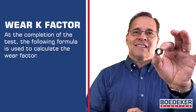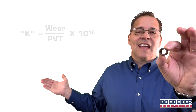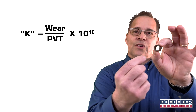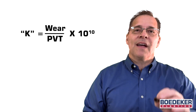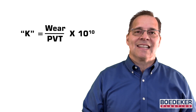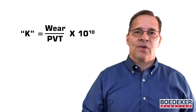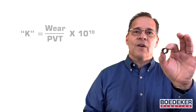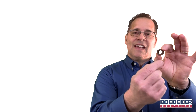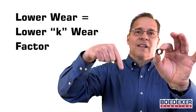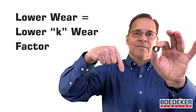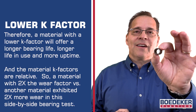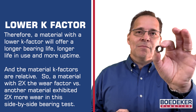At the completion of the test, the following formula is used to calculate the wear factor. The wear factor K is equal to the radial wear in inches divided by the pressure, velocity, and time. Since the pressure, velocity, and time are always the same, the amount of radial wear on the ID drives the K factor. The lower the wear, the lower the wear factor. Therefore, a material with a lower K factor will offer a longer bearing life, longer life in use, and more uptime.